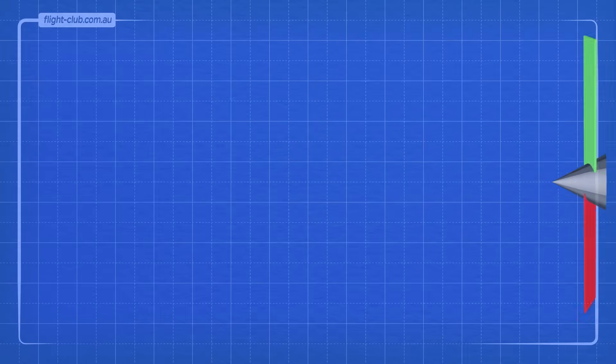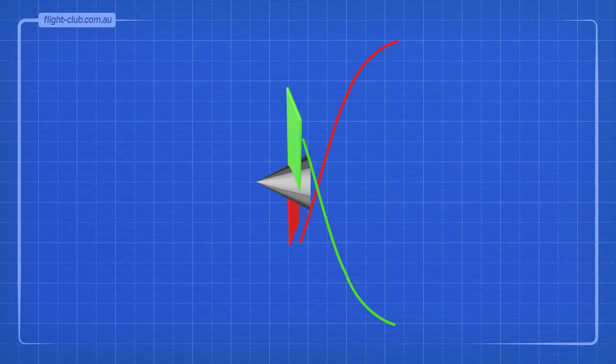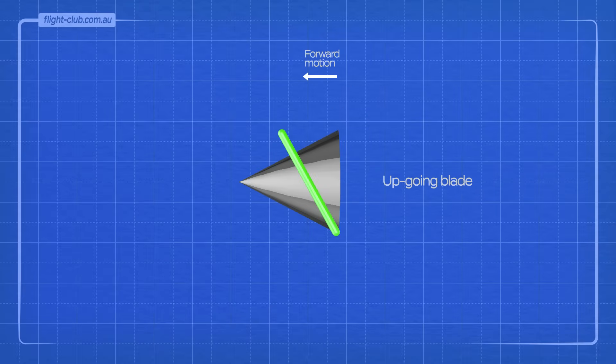As the aeroplane moves straight ahead, each blade follows a corkscrew path through the air called a helix. The forward motion is combined with the rotational motion, and the resultant velocity of the propeller moving through the air is obtained.